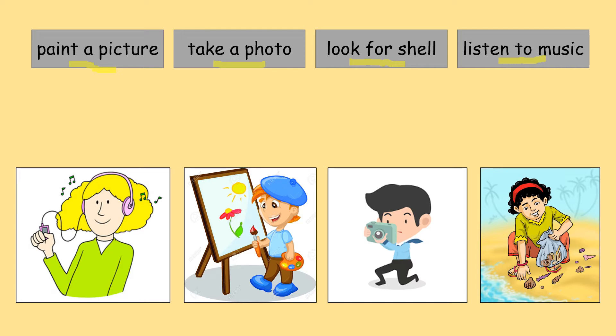Now what I want you to look at is the verb — kata kerja, apa perbuatan yang dia lakukan. For number one, the verb is paint. Paint a picture. Do you know what is paint? Painting — you use a brush, you use colour, you use a drawing pad. So that is paint, painting.